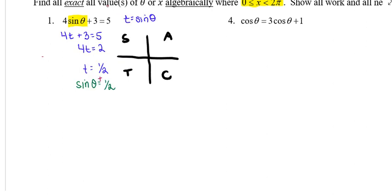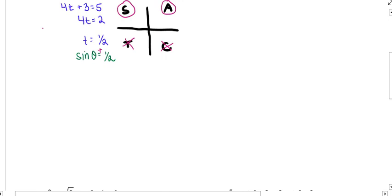The first thing I'm going to do is consider 'All Students Take Calculus.' This has a positive sine value, so I want to look only in the quadrants where sine is positive. Sine is positive in quadrant 1 where all trig functions are positive, and sine is positive in quadrant 2. Sine is not positive in quadrant 3 or 4. So the quadrants where I want to set up my triangles are quadrants 1 and 2.